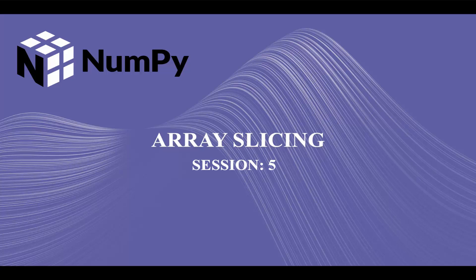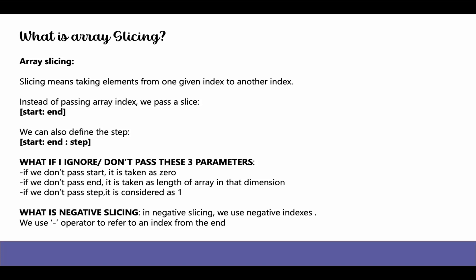Hi guys, welcome back to our course on NumPy. Today we are going to cover array slicing, so let's get started. First of all, what is array slicing? Slicing means taking elements from one given index to another index. Instead of passing an array index, we pass a slice. The syntax is that we pass a starting element and an ending element, denoted by start and end respectively. We can also define the number of steps, passing either two parameters — start and end — or three parameters: start, end, and step.